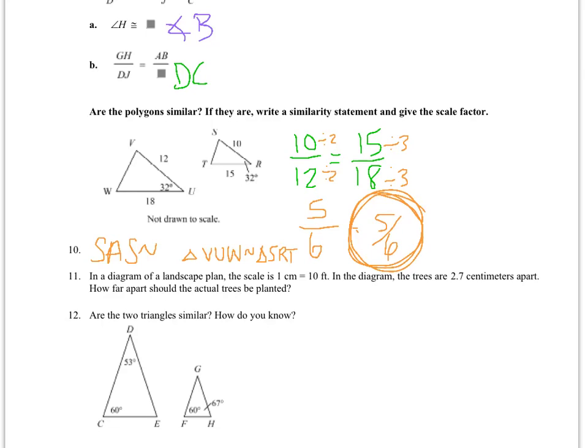For number 11, it's talking about this diagram of a landscape plan, kind of like a scale drawing or a blueprint. I need to figure out if the scale is 1 centimeter equals 10 feet, then if trees are spaced 2.7 centimeters, how far should they actually be planted apart? So I know my scale is 1 centimeter over 10 feet. So I want to know if I have 2.7 centimeters, how many feet is that? I'm going to multiply 2.7 by 10, because I have cross multiplication, which gives me 27 equals x. I know that that's going to be feet, because I have centimeter to centimeter, feet to feet. So I want to plant my trees 27 feet apart.